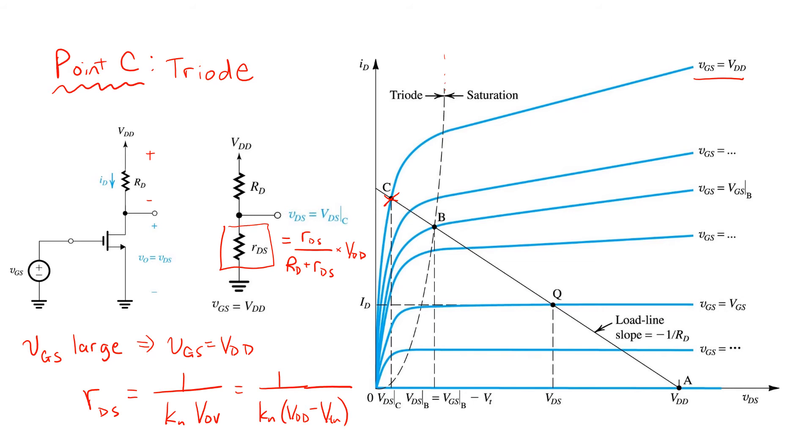Again, it depends on the specific values of VDD and the threshold voltage. Graphically, we can also solve for it again by just having this plot in the triode region and finding its intersection with our load line, point C.